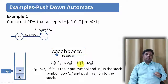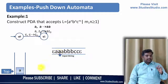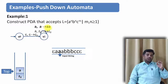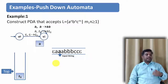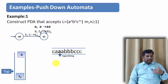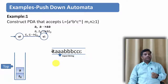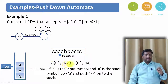When the first symbol a appears with Z0 on top of the stack, we push a Z0 onto the stack. The transition is: δ(q1, a, Z0) = (q1, aZ0). For subsequent a's, when a is the input symbol and a is on top of the stack, we push aa. The transition is: δ(q1, a, a) = (q1, aa). We remain in state q1 as long as a's keep appearing.